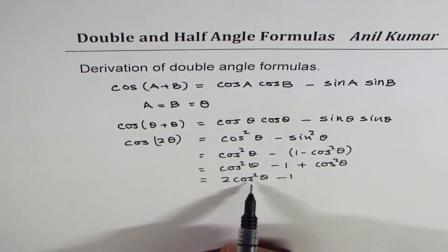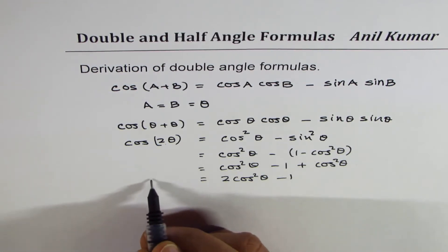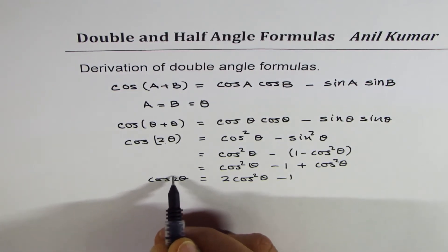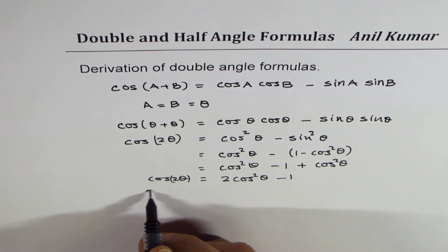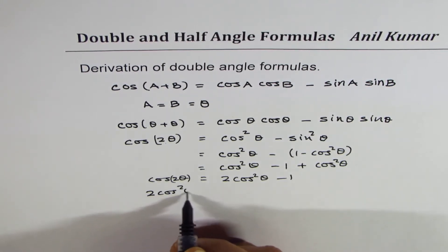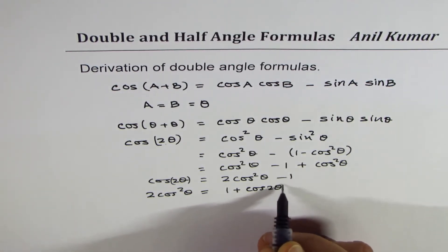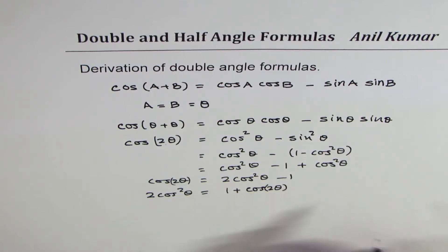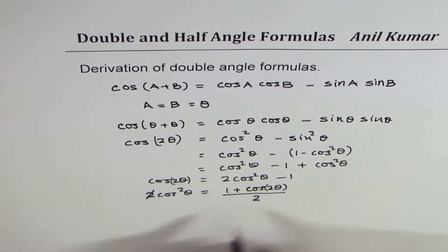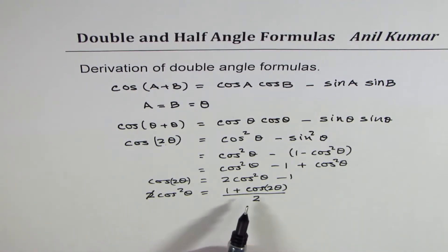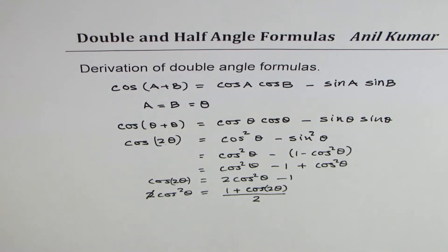Now if you rearrange — bring the 1 to this side — we have cos 2 theta on this side. So it becomes 2 cos squared theta equals 1 plus cos 2 theta. Dividing by 2, we get our relation: cos squared theta equals 1 plus cos 2 theta divided by 2. We'll use this particular relation to prove the question we have.